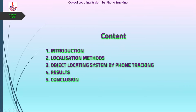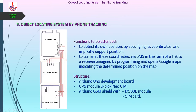Our paper is structured in four parts. After the introduction, we shall speak about the object itself. We intended to create something very low-cost and very simple with a satisfactory accuracy. This system detects its own position by specifying its coordinates — and implicitly the support position — so it can be placed on another object or person. It transmits these coordinates via SMS in the format of a link to a receiver, which opens Google Maps indicating the determined position.